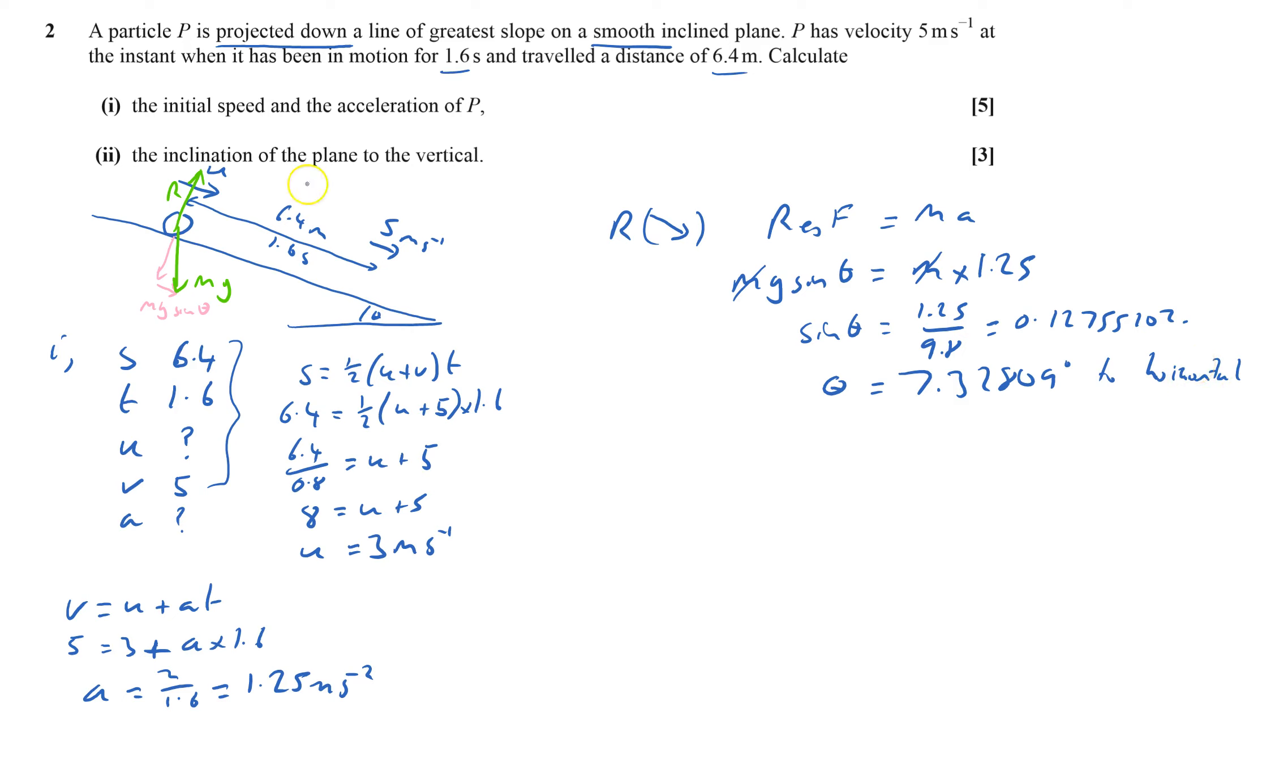But it wants the plane to the vertical, it doesn't want this angle. So therefore it's 90 minus that angle, which equals 82.6719203 degrees to the vertical. Always work out the angle which you feel more comfortable with to start, but then just check it's what they wanted. That's question two done.